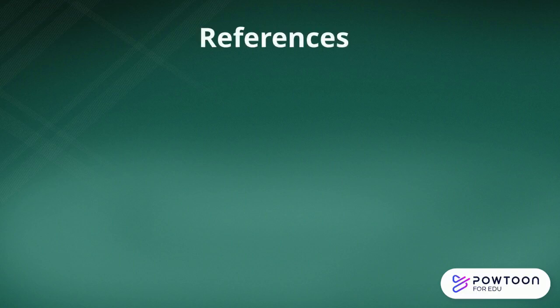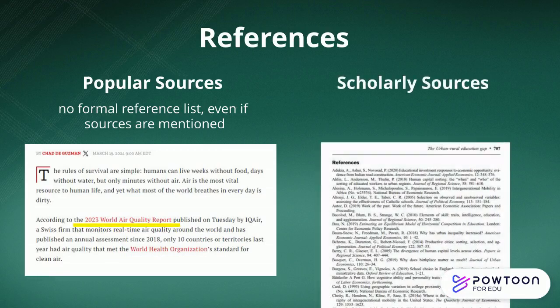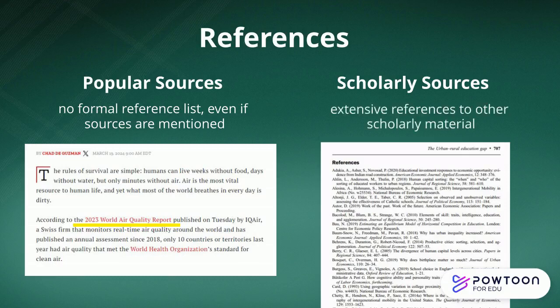The use of references is another way you can differentiate scholarly sources from popular sources. Popular sources don't usually include a formal list of references, even if they might refer to a study or information source within the text. Scholarly sources are connected to other scholarly work, so it's essential that the authors document the resources they used in their own research. Scholarly sources usually have an extensive list of formal references.